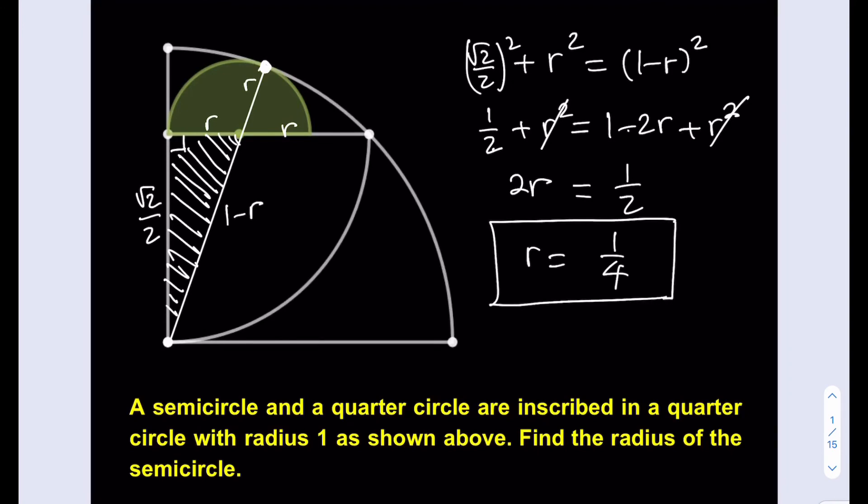Okay, that's it. We found the radius of the semicircle to be 1 fourth. Thank you for watching. See you in the next video. Until then, take care.